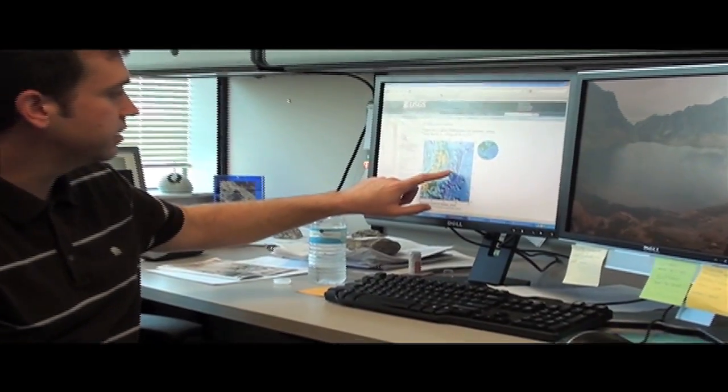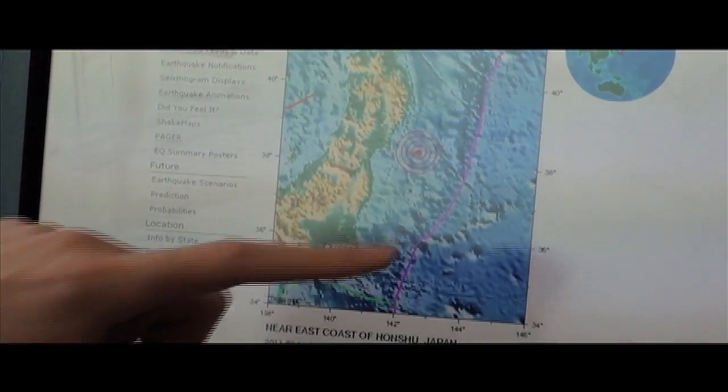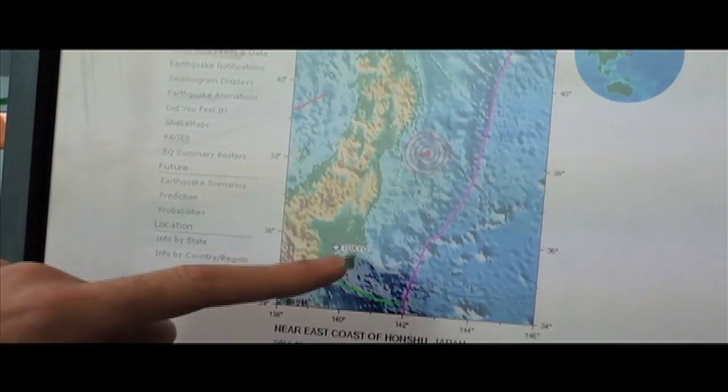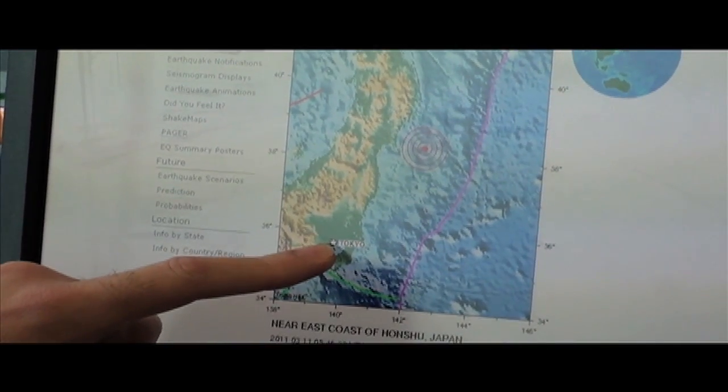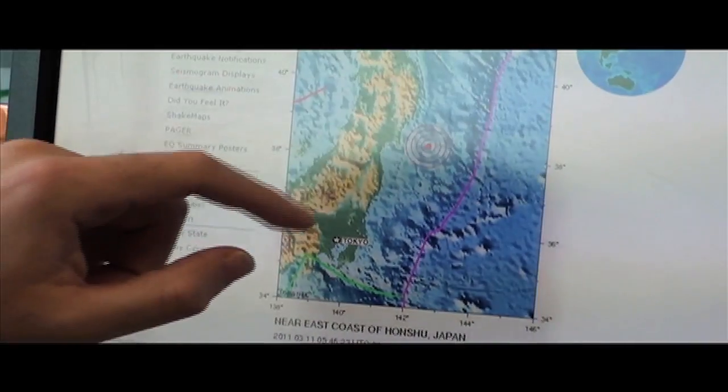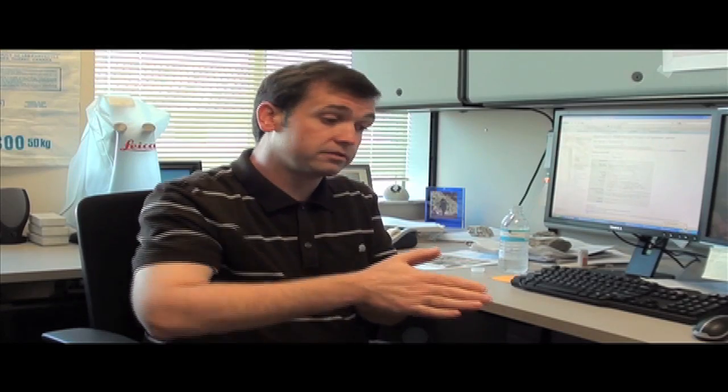So this little red dot right here shows that the earthquake occurred about 80 miles off the northern coast of Japan. The northern part of Japan isn't as populous as the southern area. See, Tokyo is down here. And so there's many more people who live in southern Japan than northern Japan, but there's still a significant population that was affected by this earthquake.